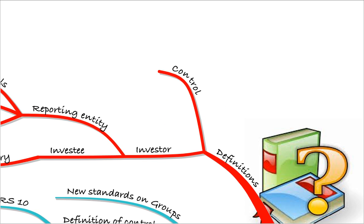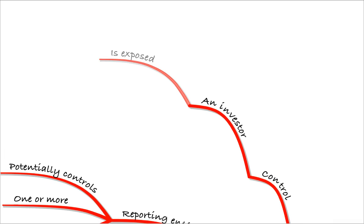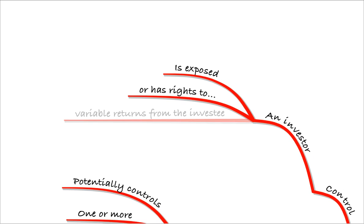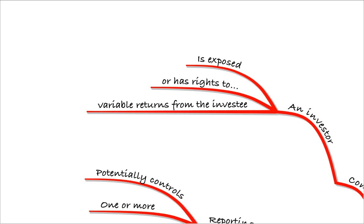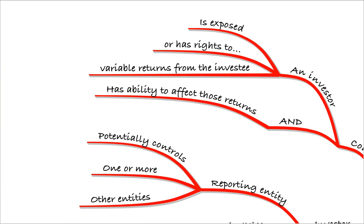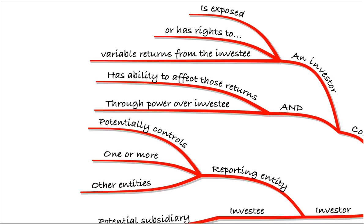Now, control. The definition of control is that an investor is exposed to, or has rights to, variable returns from the investee — for example, dividends, profit share, etc. — and secondly, they have the ability to affect those returns through power over the investee. That's the technical definition. What we need to do is break that down and see exactly how we're going to decide whether an investor has control over an investee, i.e. whether the investee is a subsidiary or not.